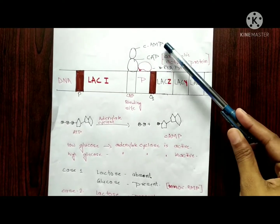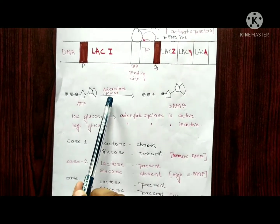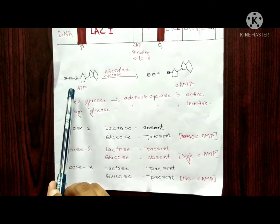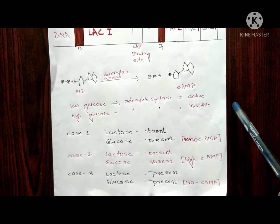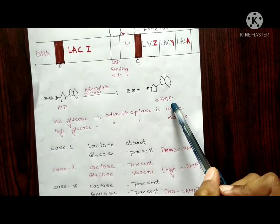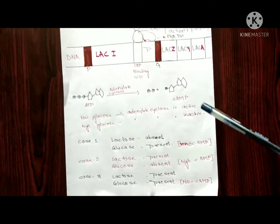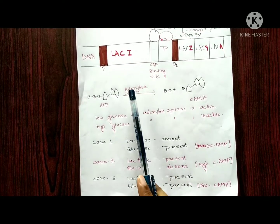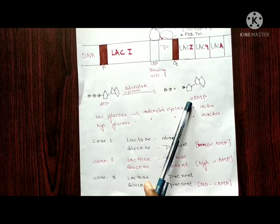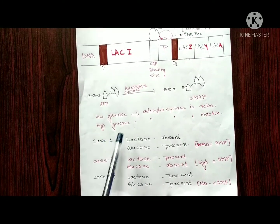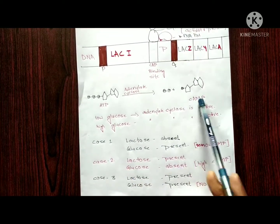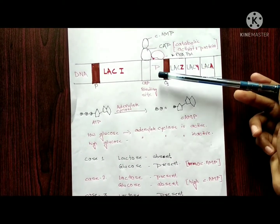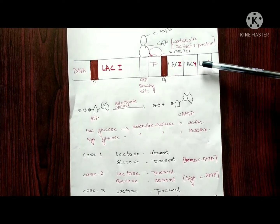Cyclic AMP is produced from ATP by an enzyme called adenylate cyclase, which removes two phosphates from ATP to produce cyclic AMP. The level of cyclic AMP depends on glucose concentration. When glucose levels are high, adenylate cyclase is inactive, so cyclic AMP is not produced, CAP is not activated, RNA polymerase does not bind tightly to the promoter, and the transcription rate remains very low.